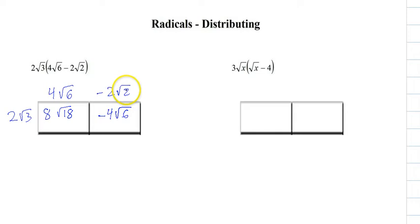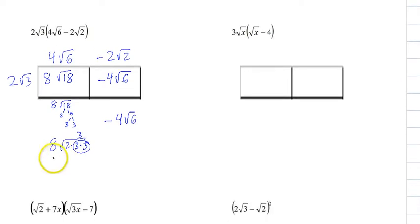So we know two and three are both prime, and they made the six, nothing, that one's done. But this one we can keep going with. So eight square root of 18, that's two and nine, three and three. So we get eight square root of two times three times three. There's a pair.